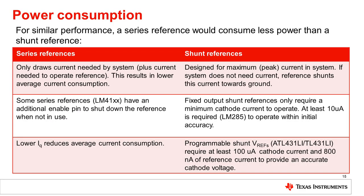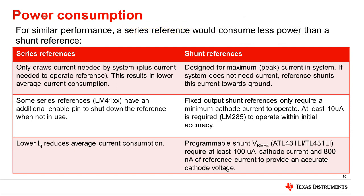Power consumption will differ between topologies. In general, a series voltage reference will consume less power than a shunt voltage reference. A series voltage reference draws the current needed by the system plus a quiescent current, which can be small, so the series reference current consumption will be low for light loads and will increase for heavier loads. The shunt reference, on the other hand, must be configured to supply the peak current required for the application, so the total current drawn will be the same for both light and heavy loads.